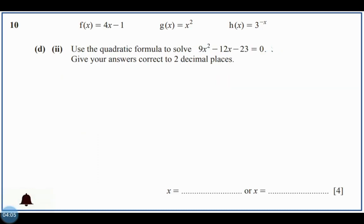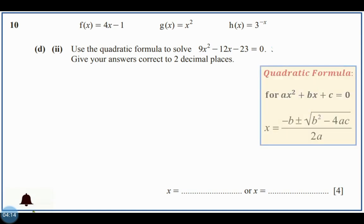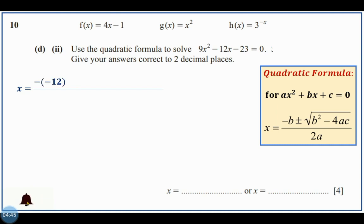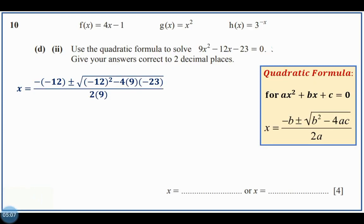Next, use the quadratic formula to solve 9x squared minus 12x minus 23 = 0, giving answers correct to two decimal places. The quadratic formula for ax squared plus bx plus c = 0 is: x = (negative b plus or minus square root of b squared minus 4ac) over 2a. Identifying: a = 9, b = negative 12, c = negative 23. Substituting: negative(negative 12) plus or minus square root of (negative 12) squared minus 4 times 9 times negative 23, all over 2 times 9.